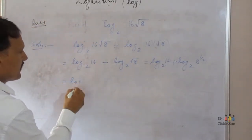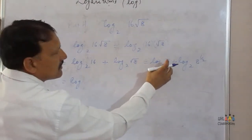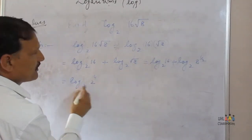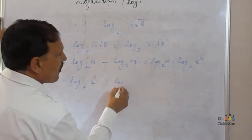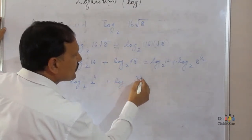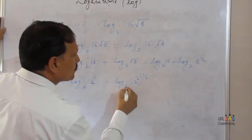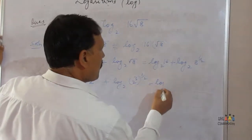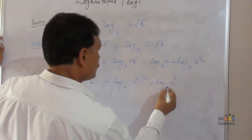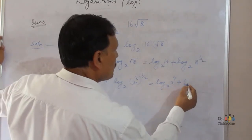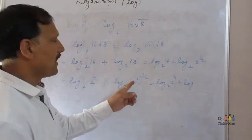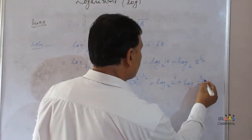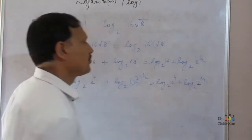Now 16 can be written as 2 raised to the power 4, and 8 can be written as 2 raised to the power 3. So this becomes log of 2 raised to 4 to the base 2, plus log of 2 raised to 3 to the base 2.